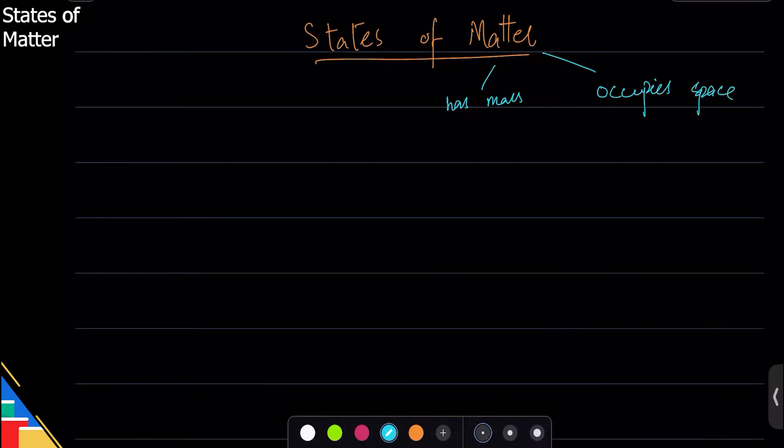It occupies space which means it has volume. So space means volume, and mass means if you put it in a gravitational field it will have some weight, but even without that it has some mass that you can quantify.